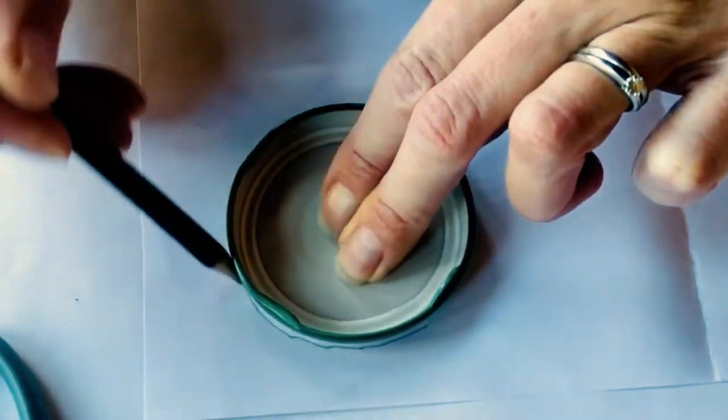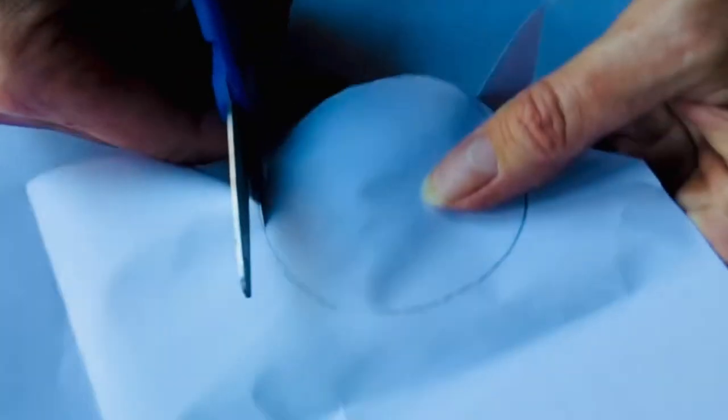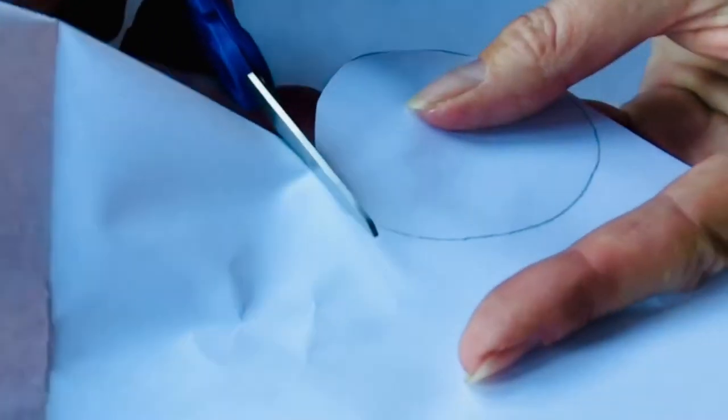First you're going to take your jam jar lid and draw around it with your pencil onto your white paper to make a circle. Then you're going to cut out your circle with a pair of safety scissors.